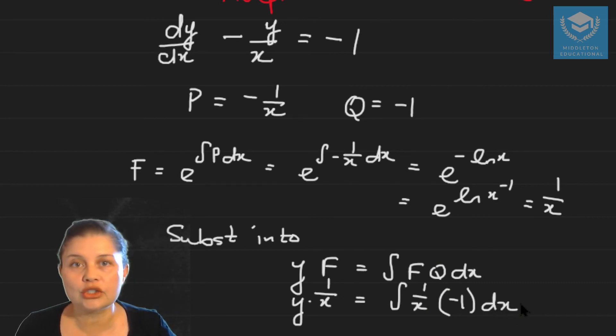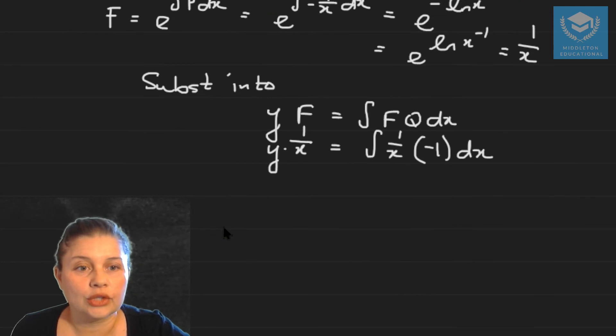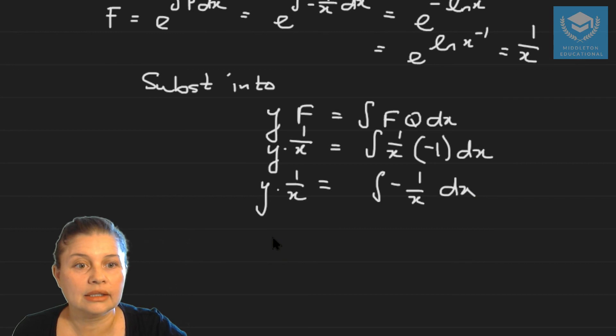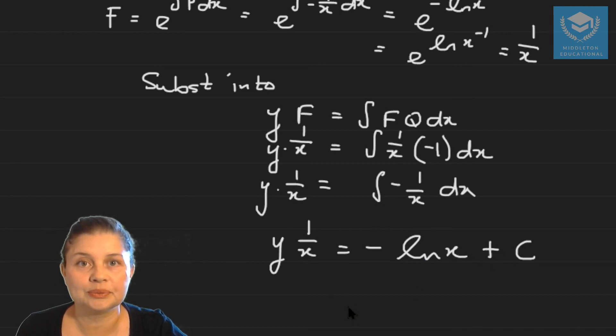And now you can just integrate and solve. So that means that y times one over x is equal to the integral of minus one over x dx. And y one over x is going to equal to minus ln x plus a constant value. And that would be the general solution of your differential equation.